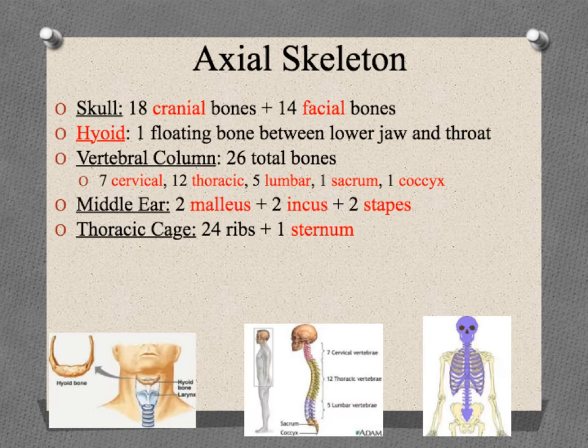Now we're going to look at some of the bones themselves, and you will be working on learning a lot of these names. We divide the skeleton into two parts. The midline — everything down the center — is called the axial skeleton, which includes the skull, the spine, and the rib cage.